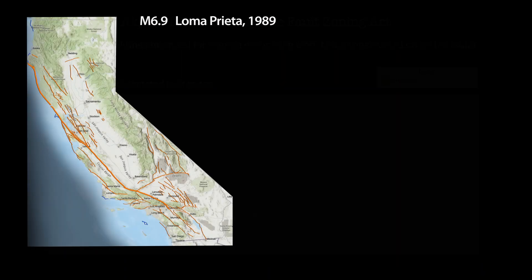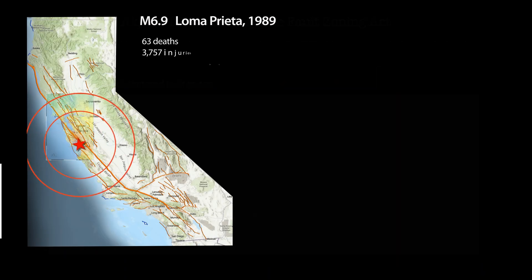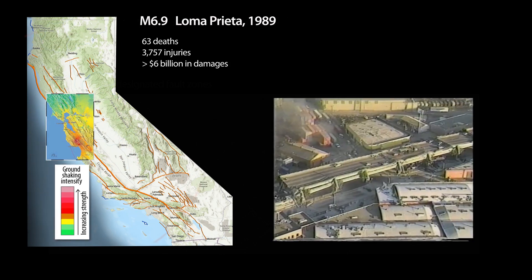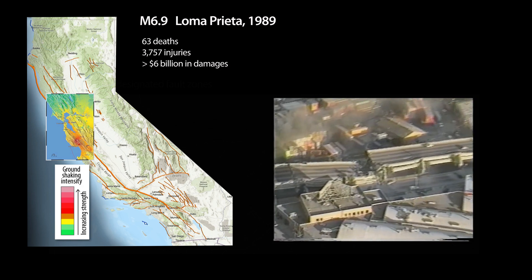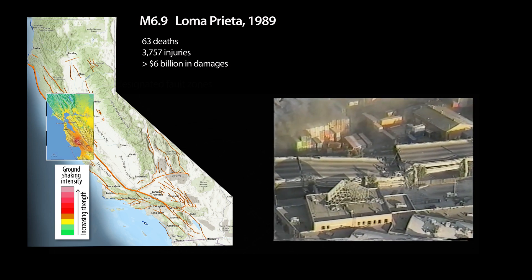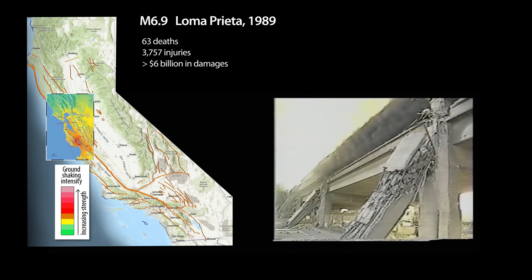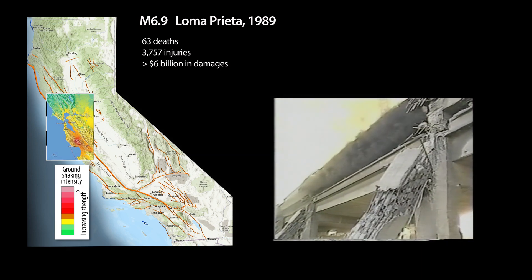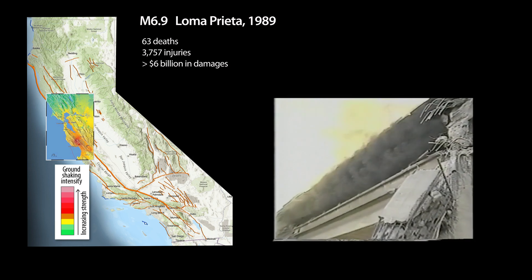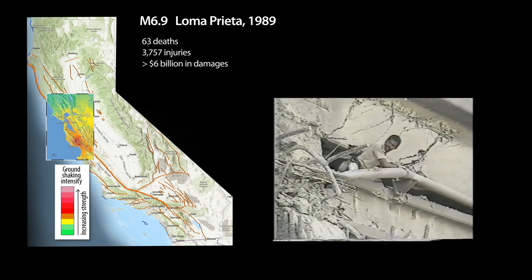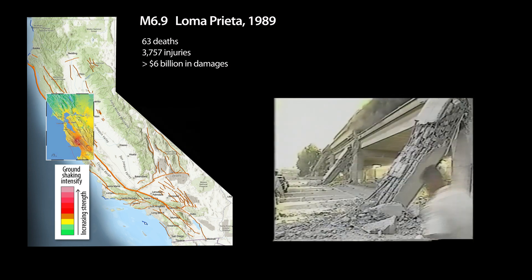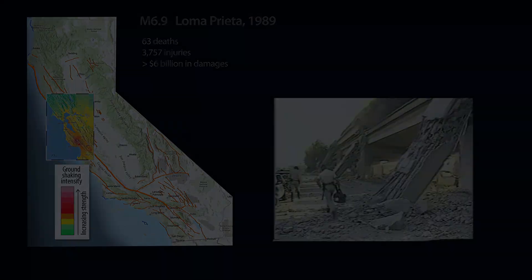In 1989, the magnitude 6.9 Loma Prieta earthquake caused 63 deaths, almost 4,000 injuries, and more than $6 billion in damages. Much of this damage was caused by liquefaction and the amplification of shaking in soft soils.